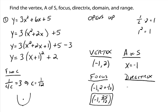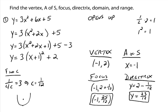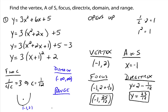The directrix would be a horizontal line: y equals the y part of the vertex minus the c value. So y equals 23 twelfths. The last thing to find is domain and range. Since it opens up, it goes forever right and forever left — it's all real numbers for the domain. And the range: the vertex is negative 1, 2, and it opens up, so the lowest y value is 2. So 2 to infinity would be the range.